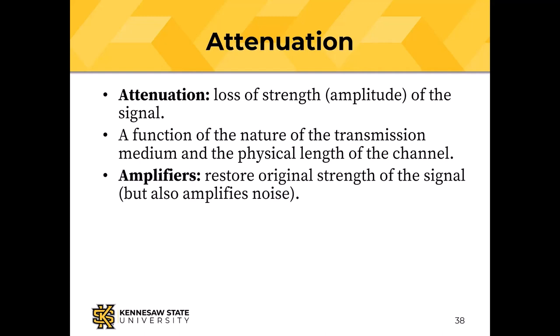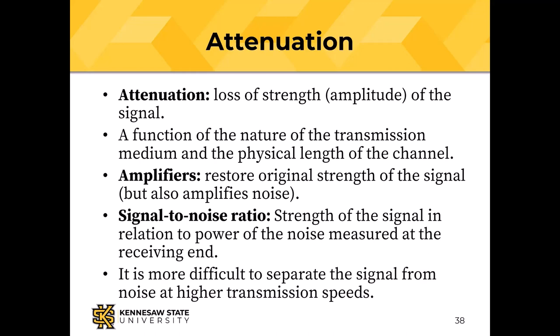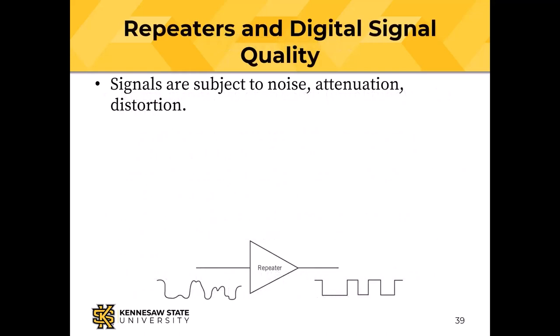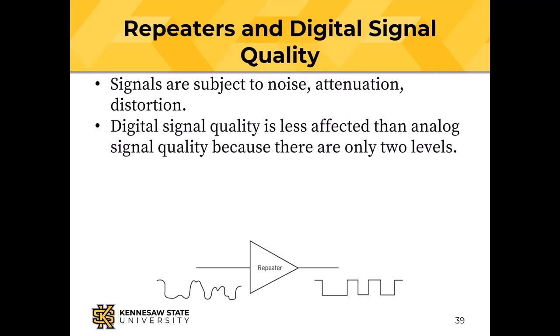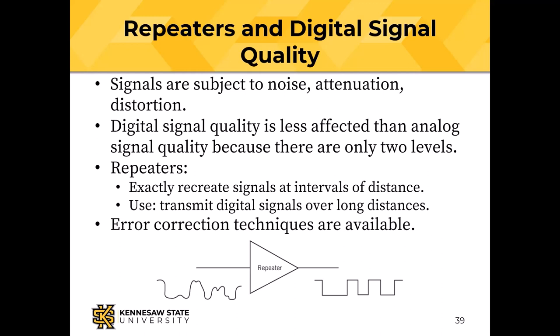Amplifiers can restore signal strength, but they also amplify noise. The signal-to-noise ratio is the strength of the signal relative to noise at the receiving end — the faster you send data, the harder it is to separate signal from noise. For digital signals, a repeater can exactly recreate the signal, so we use repeaters rather than amplifiers for long-distance data transmission.